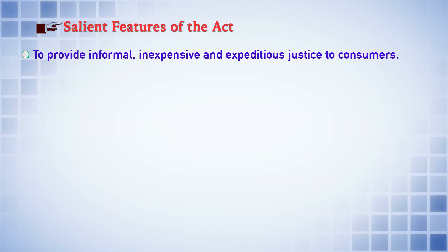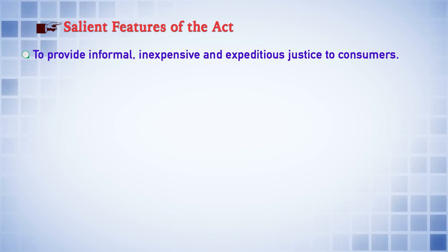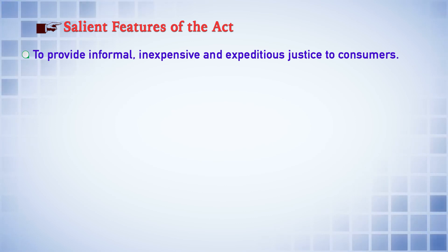Those are the broad objectives of the Consumer Protection Act. Now we slowly move into the salient features of the Act. The salient features are: to provide informal, inexpensive, and expeditious justice to consumers who are affected by the unfair practices of traders and service providers.